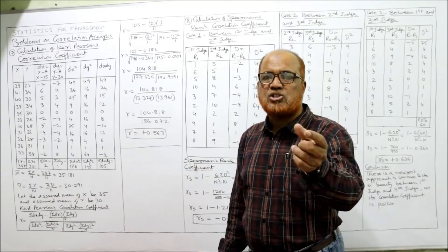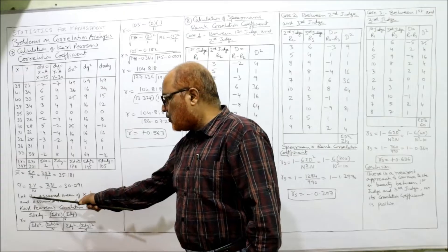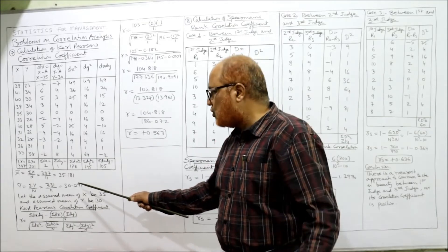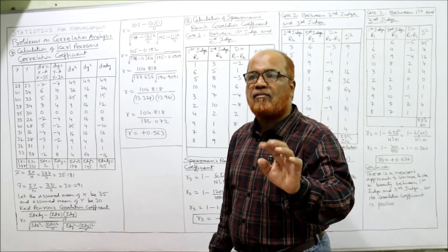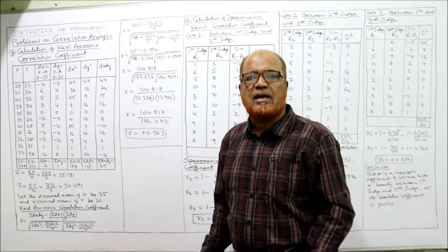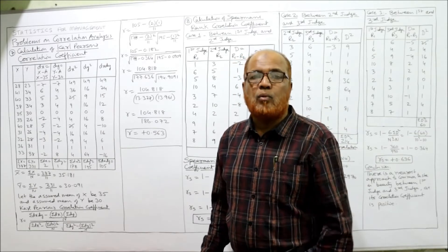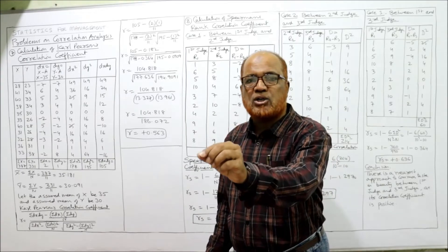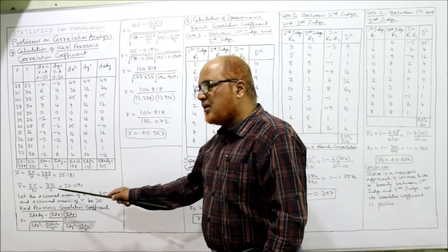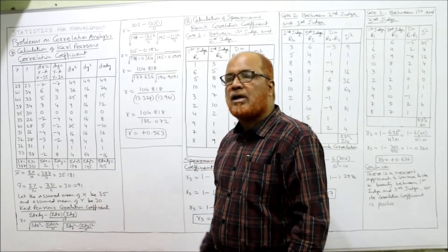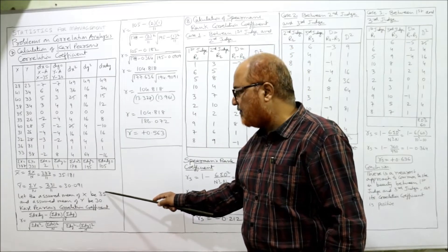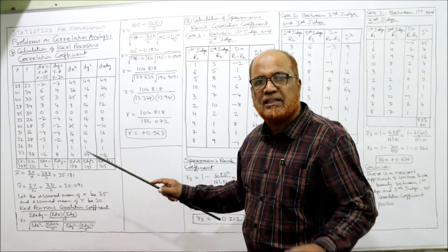The assumed mean should be nearest to the actual mean. The actual mean of x is 35.181, so let the assumed mean of x be 35. You can take any other value — even 28, 41, or 40 — and the ultimate answer will be the same, but the time taken will be more. The assumed mean nearest to the actual mean saves time. Similarly, the actual mean of y is 30.091, so the assumed mean of y is taken as 30.